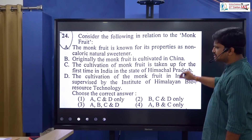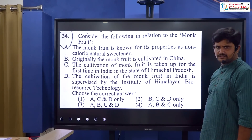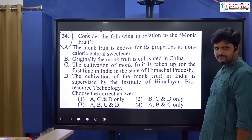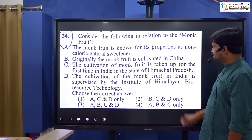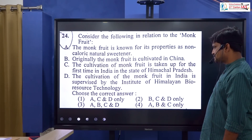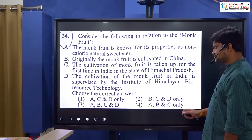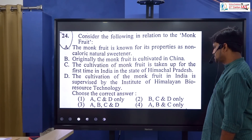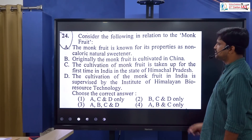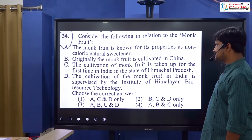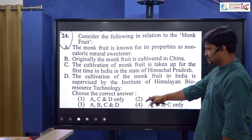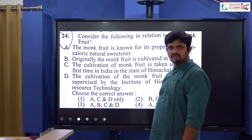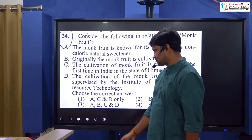Looking at the options for monk fruit, all options — A, B, C, and D — are correct. Therefore, option 3 is the right answer.